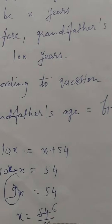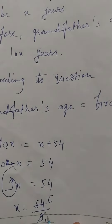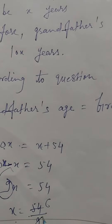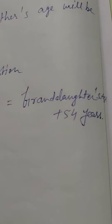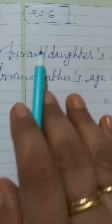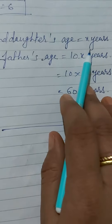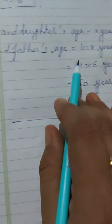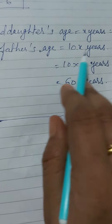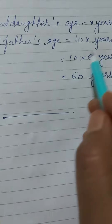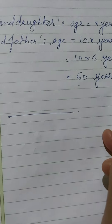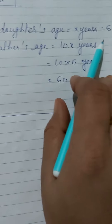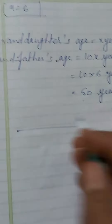Again, we have to transfer this number. So, X equals 54 divided by 9. We cut by 9 — 9 ones are 9, and 9 sixes are 54. So, X equals 6. Therefore, granddaughter's age is 6 years, and grandfather's age equals 10X. Putting the value of X: 10 into 6, that is 60 years. So, grandfather's age will be 60 years and granddaughter's age will be 6 years. That is the answer.